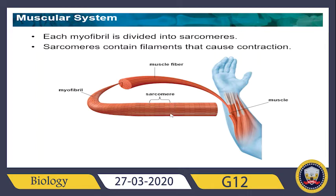Each myofibril is divided into sarcomeres. The sarcomere runs from this Z line to the next Z line. Sarcomeres contain filaments that cause contraction. The contraction starts within the sarcomere — the filaments inside the sarcomere will start the contraction whether you're writing, working out at the gym, running, or doing push-ups.